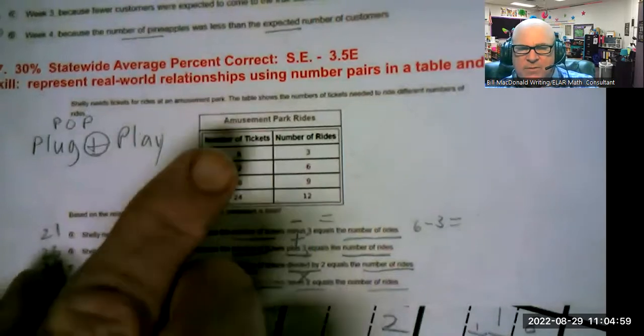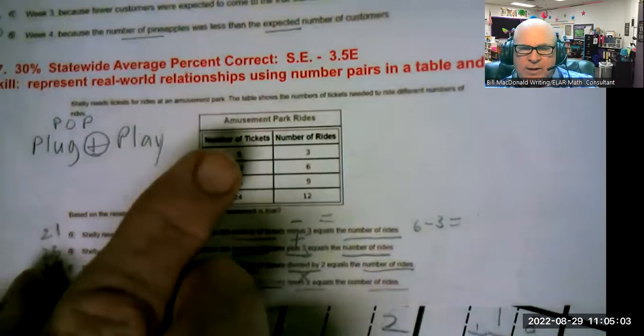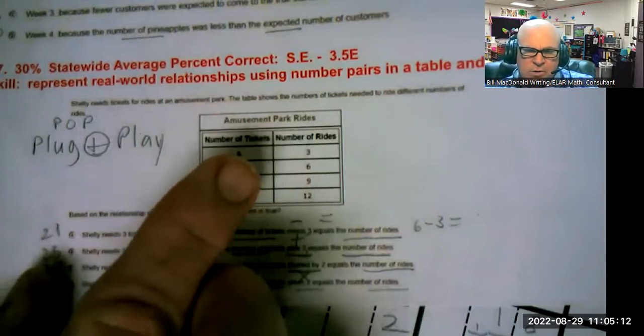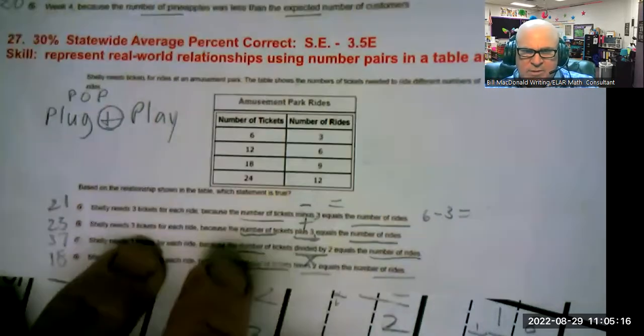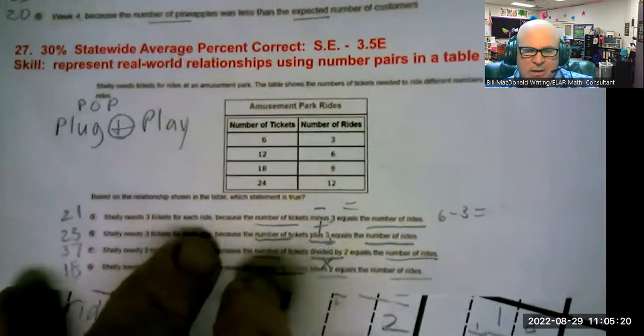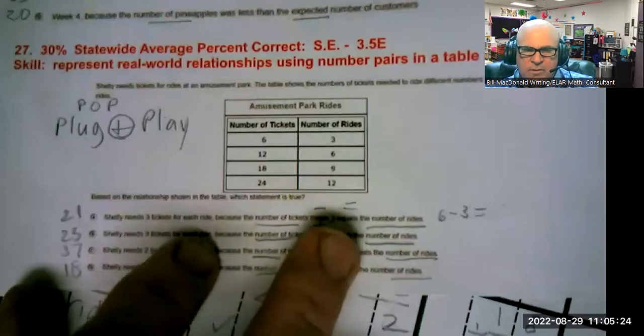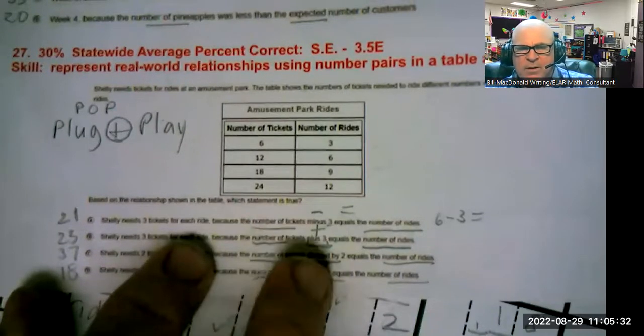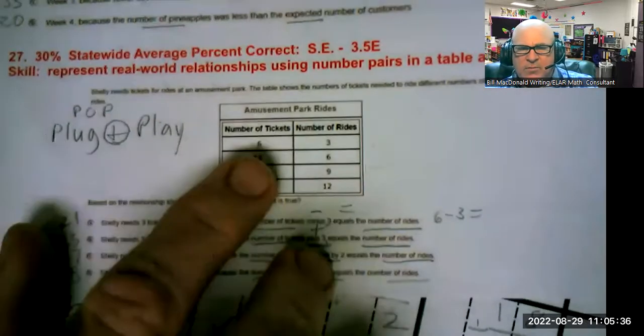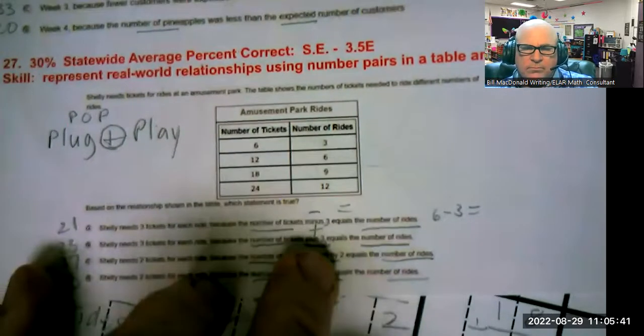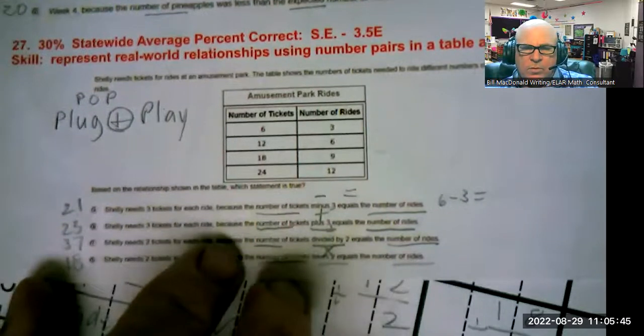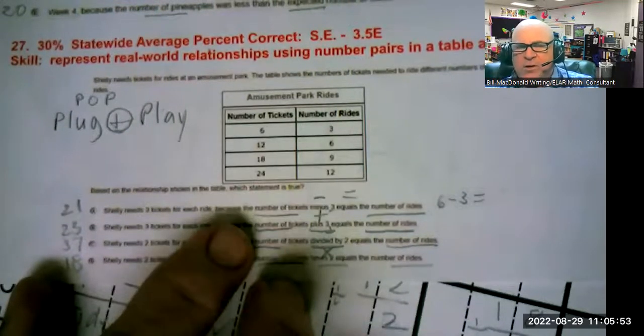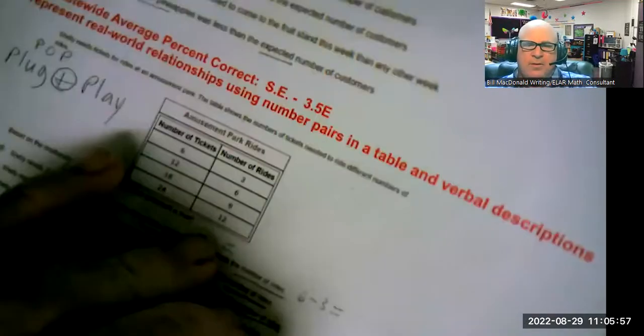But let's check the other one. Shelley needs two tickets for each ride because the number of tickets times two equals the number of rides. Well I can already tell that won't be true because if the number on the left is larger than the number on the right, the only way to get from a larger number to a smaller number is to either subtract or to divide. That means that the only two answers that could be possible are letters A or letter C, both going from a larger to a smaller number.